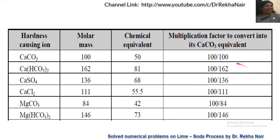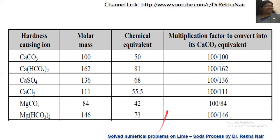Similarly, we can calculate the multiplication factor for all compounds. For compounds containing calcium or magnesium ions (valency = 2), the multiplication factor is simply 100 divided by the molecular weight. So for calcium bicarbonate it is 100/162, and for the next compound (molecular weight 136) it is 100/136, and so on.